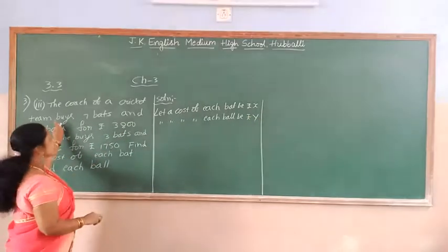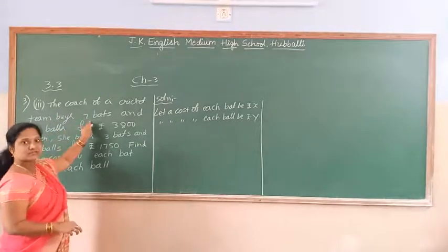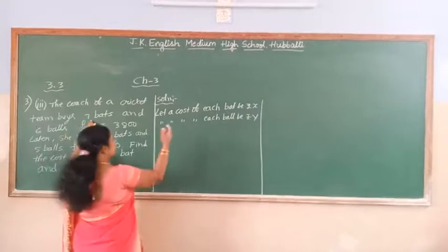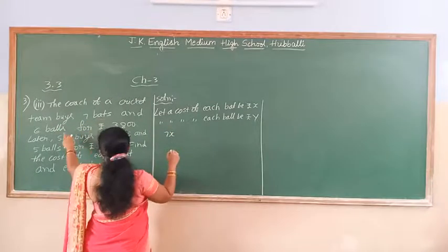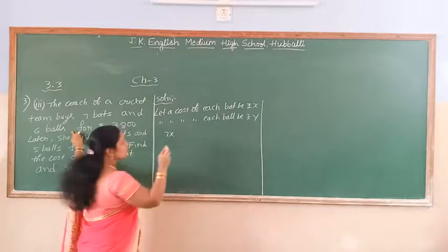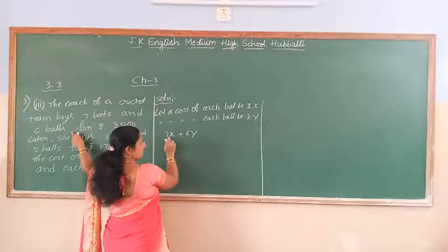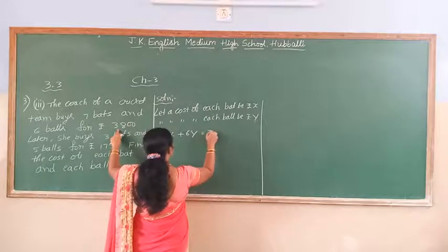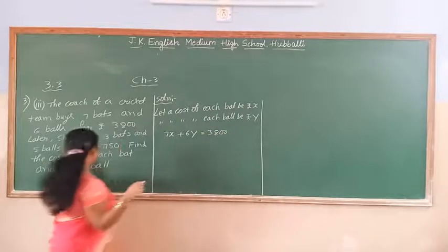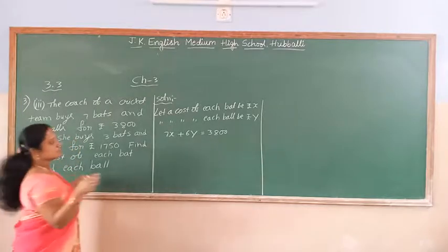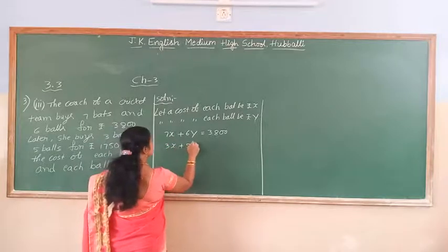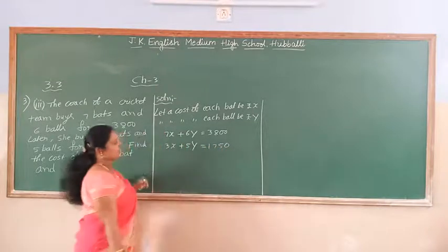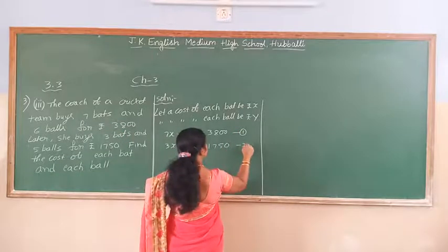Then the cost of 7 bats is 7X and 6 balls is 6Y. So the cost of 7 bats and 6 balls, he is going to buy this much for paying 3,800. Later she buys 3 bats and 5 bats for the amount rupees 1,750. You got, this is equation 1 and this is equation 2.